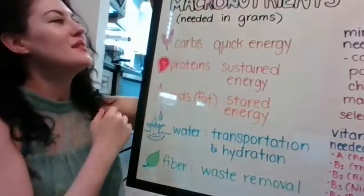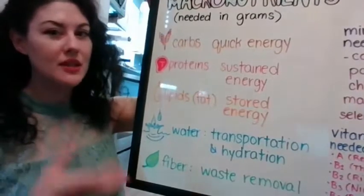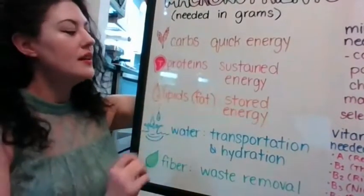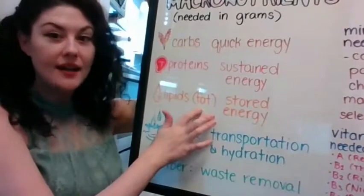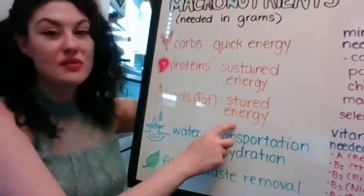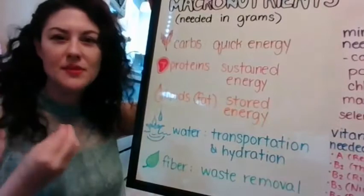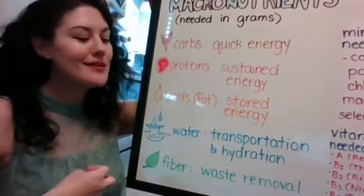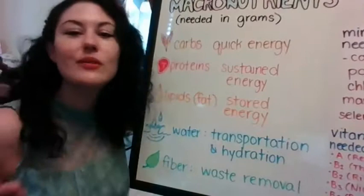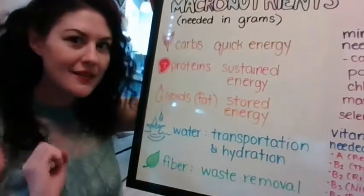If we look at our lovely chart of macronutrients — macro meaning large, meaning we need it in large quantities measured in grams — we see that lipids, or fat, is one of them. That means we do need it in our diet. It provides us with stored energy, and it also coats the neurons in your brain, helping make the myelin sheath so that your thoughts and actions work correctly without cross-wiring.